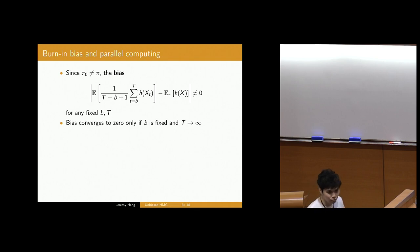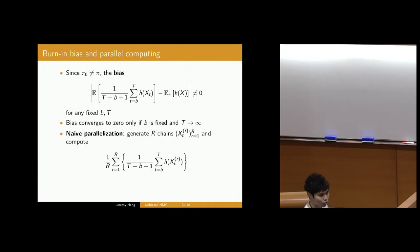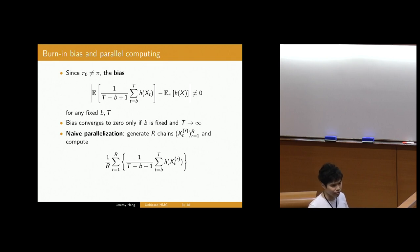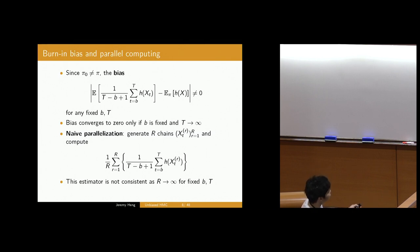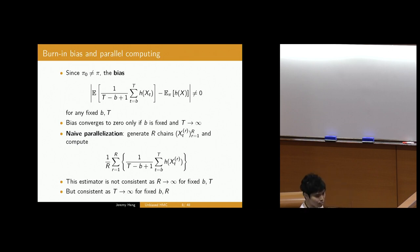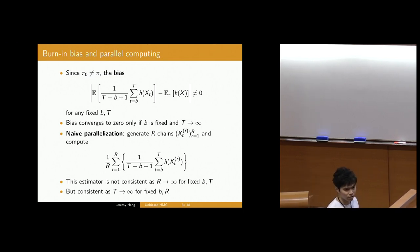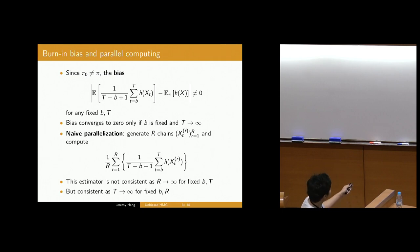The implications of these remarks are that if you were to do what I'll call naive parallelization — simulating capital R chains and computing the average across those R chains as an estimator — this estimator would not be consistent as you send the number of processes R to infinity with fixed B and T. What you do know is that this estimator would be consistent as you send the number of samples to infinity. This is not quite what you want if you have access to a parallel compute environment with a large number of cores.